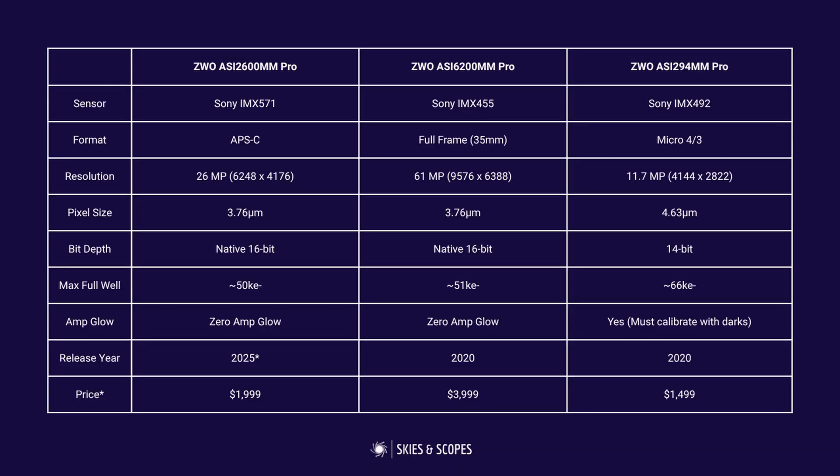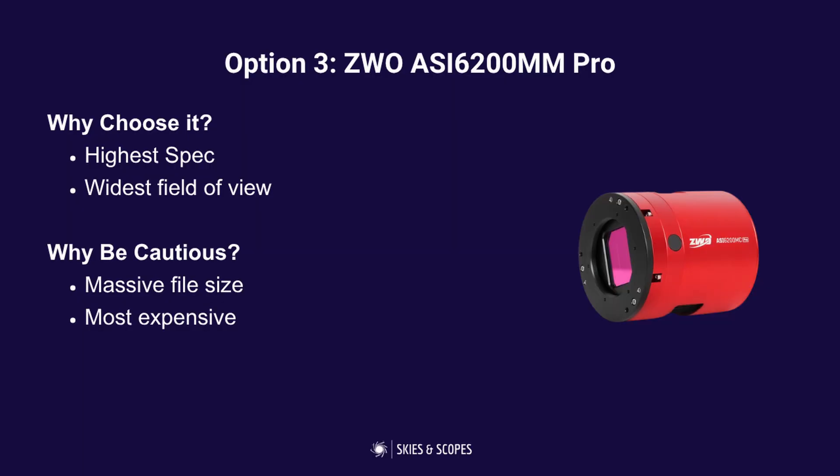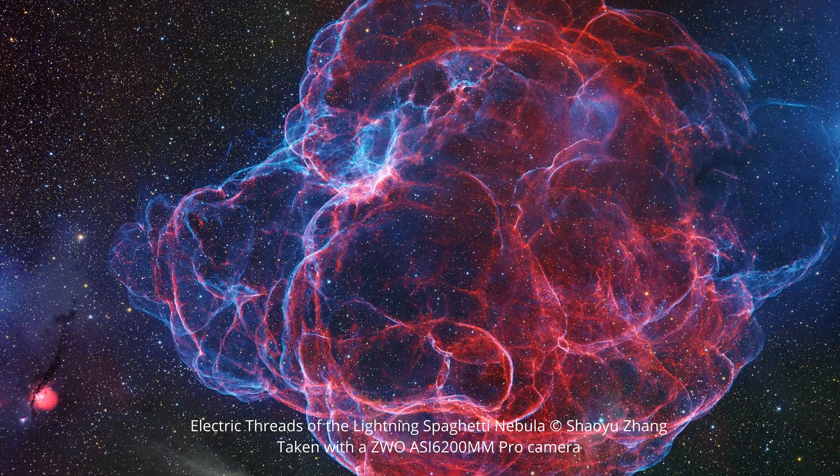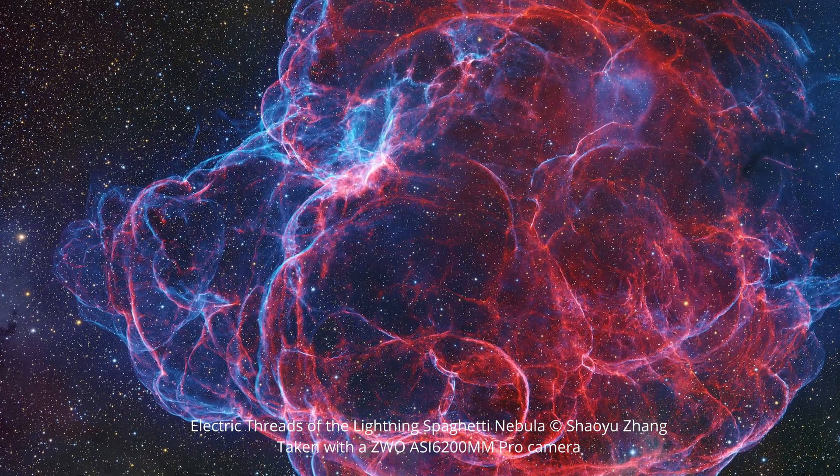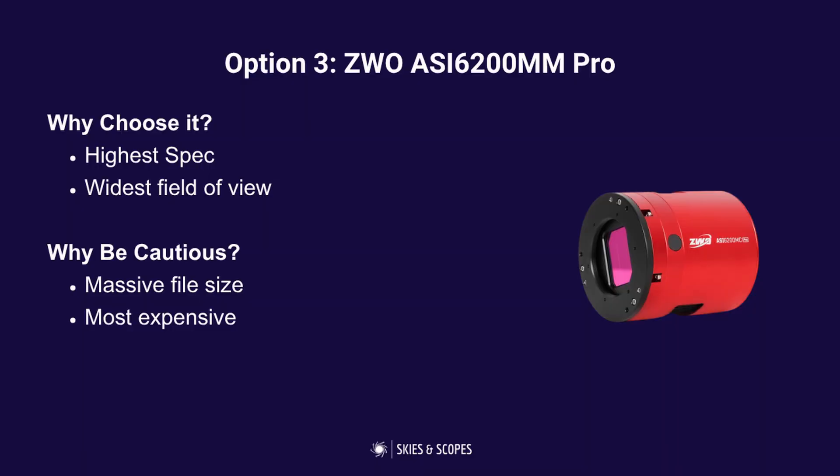One reason to be cautious about the 2600MM Pro is file size — you'll be dealing with roughly 100 megabyte files to process. It also has a medium-sized sensor, so the field of view is wider than the 294 but not as wide as the full-frame 6200. The 6200MM Pro is the most premium option: highest resolution at 61 megapixels, widest field of view with a full-frame sensor, and it shows up very high in the results — but it retails at just under $4,000, twice the price of the 2600.